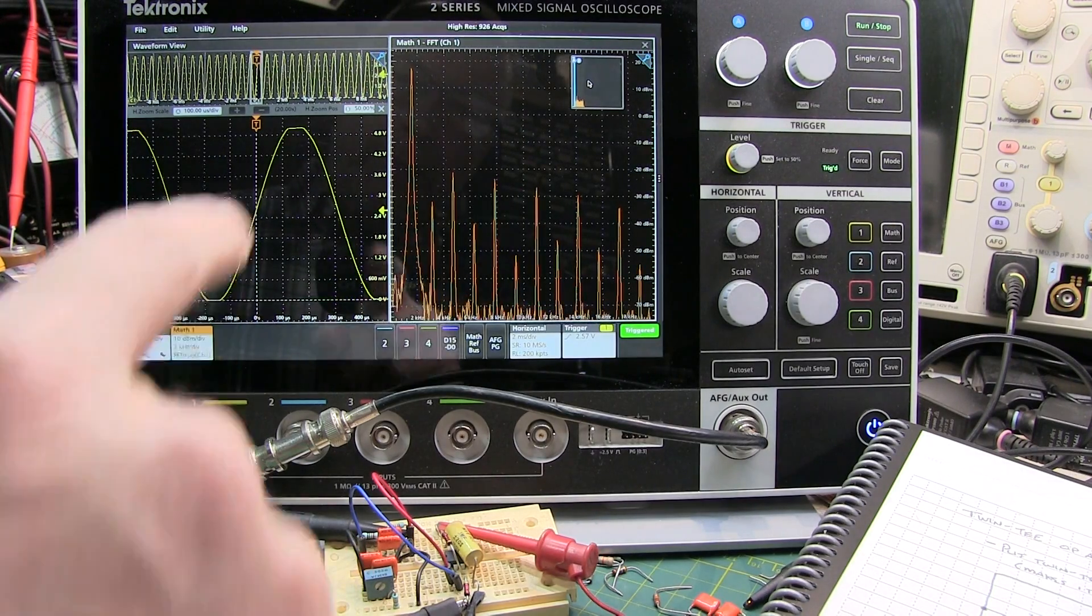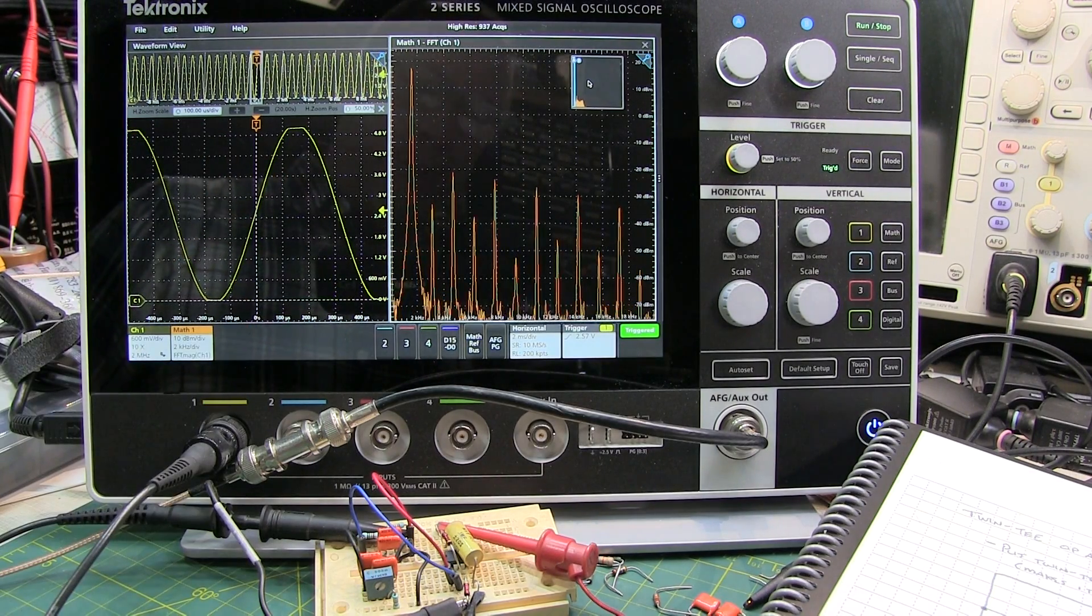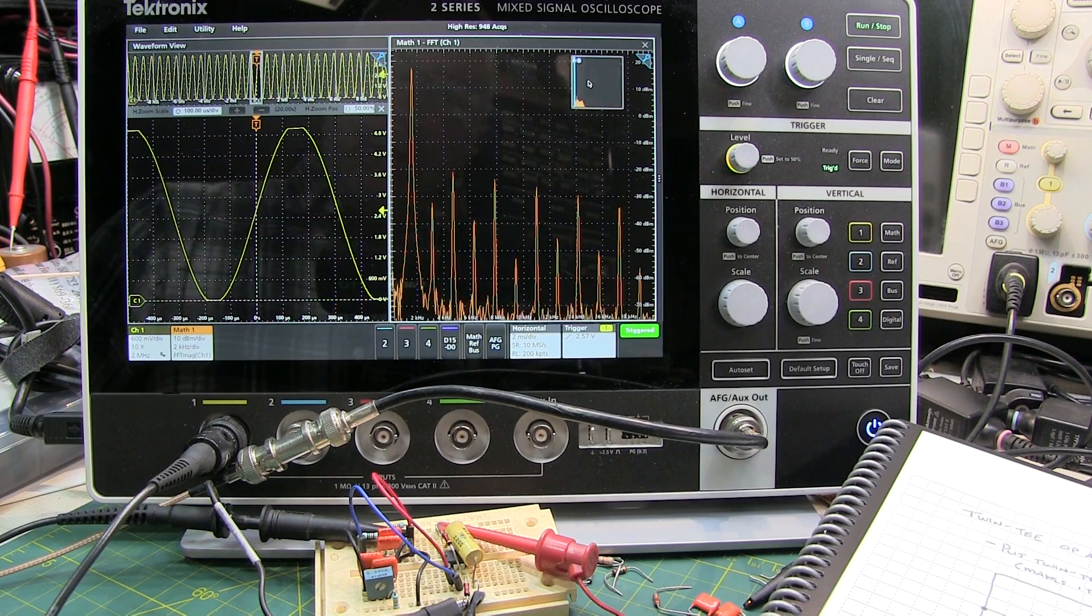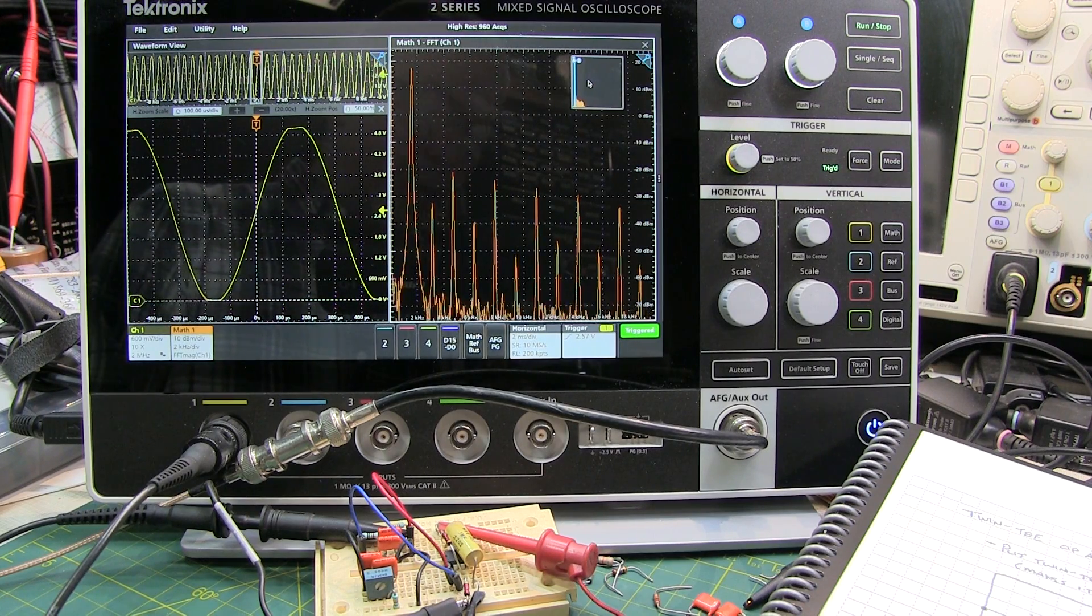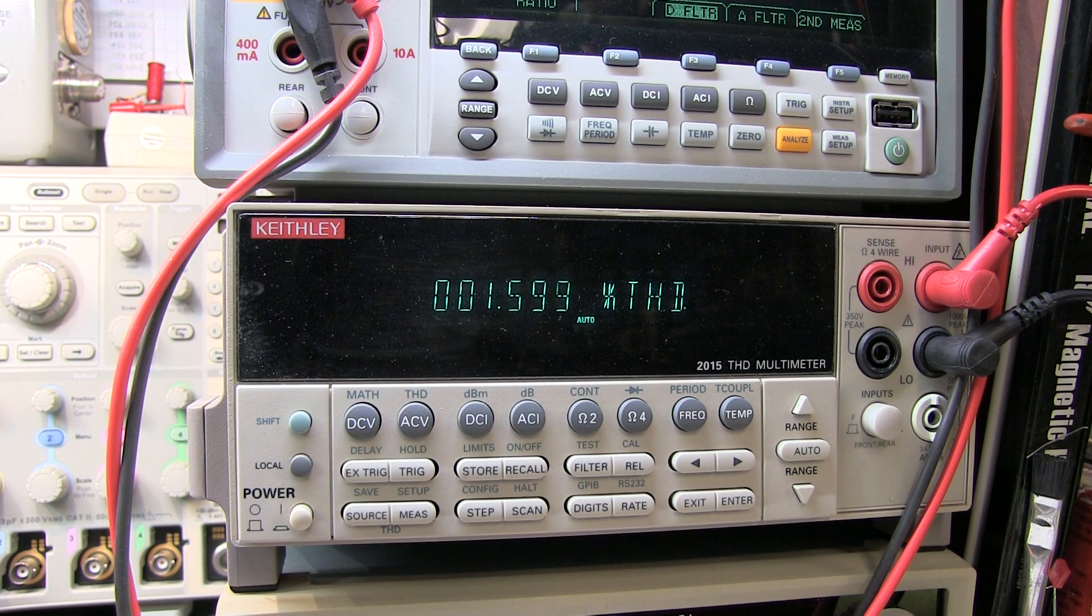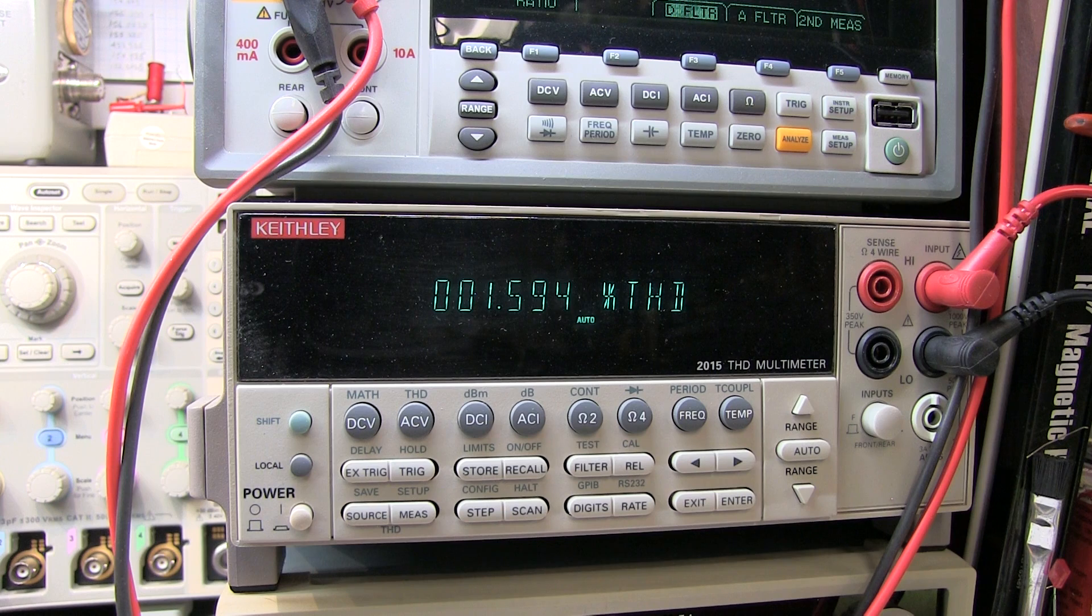Let's make a quick measurement at this level with the THD multimeter to see what level of total harmonic distortion this is. We're at about 1.6% total harmonic distortion with that amount of visible distortion on the peaks of the signal.